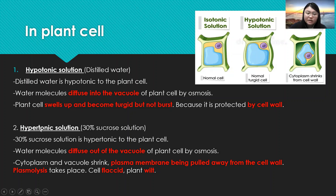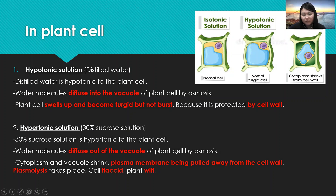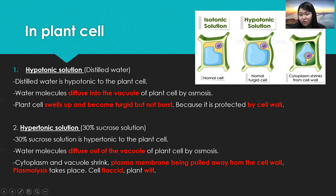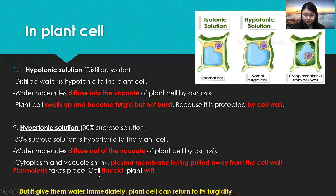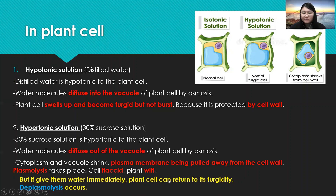When the plant cell is put into a hypertonic solution — 30% sucrose solution — water molecules will diffuse out of the vacuole of the plant cell into the 30% sucrose solution by osmosis. The cytoplasm and vacuole will shrink, and the plasma membrane will be pulled away from the cell wall. Plasmolysis takes place and cells become flaccid, causing plants to wilt due to lack of water. However, if water is supplied immediately, the plant cell can return to its turgid state and deplasmolysis occurs.